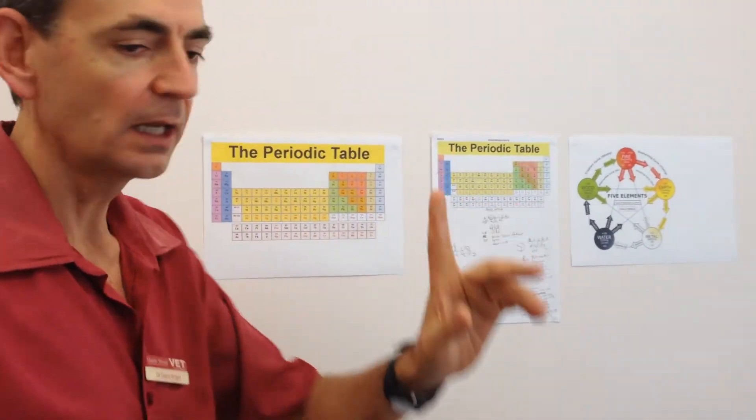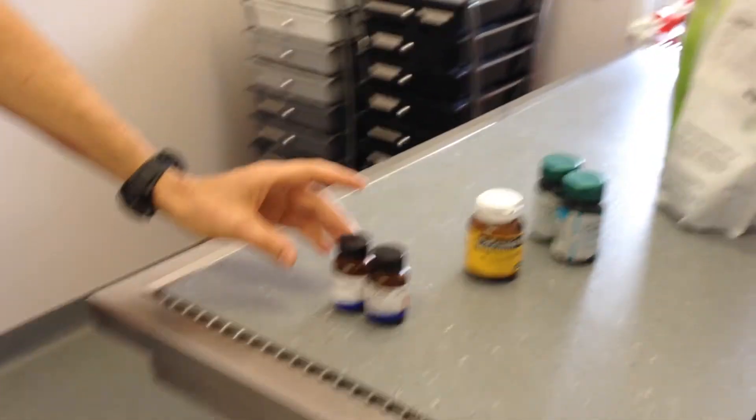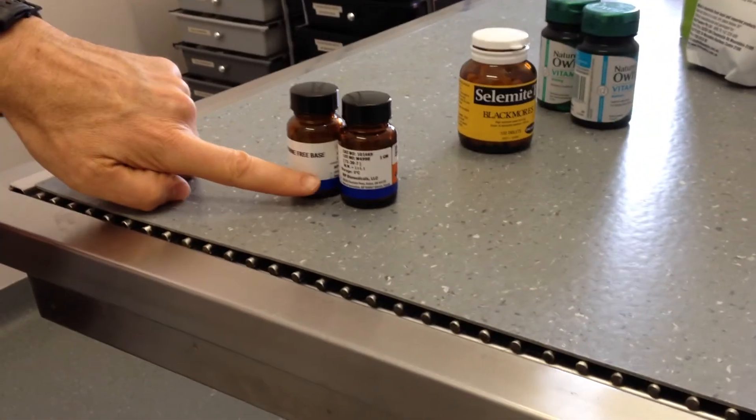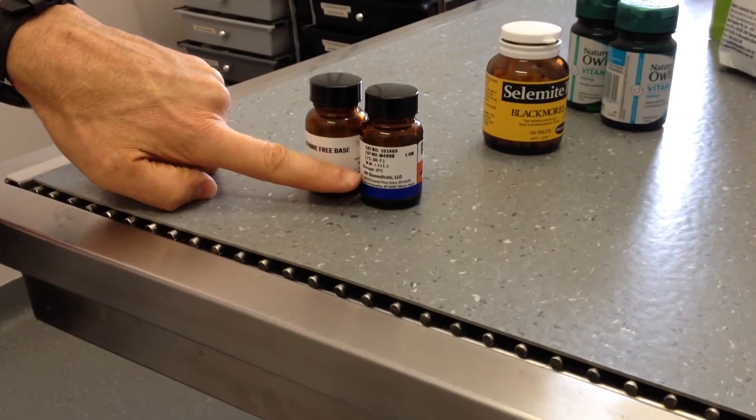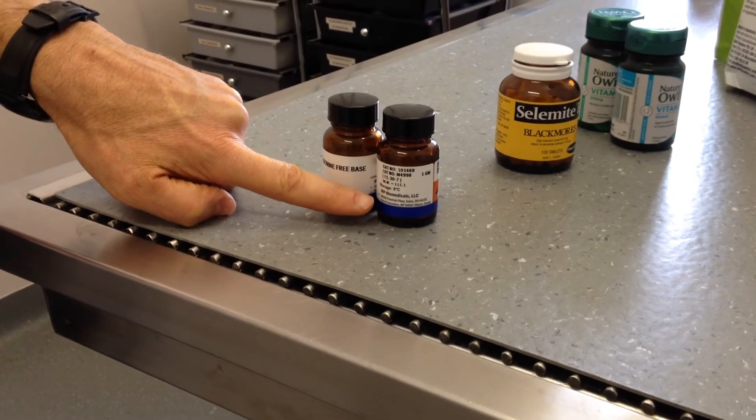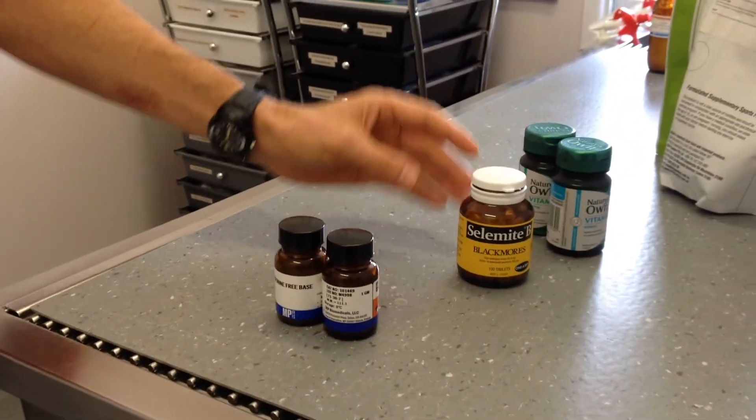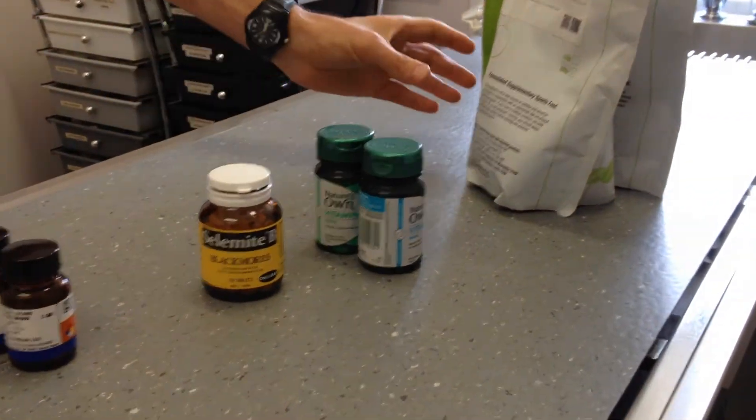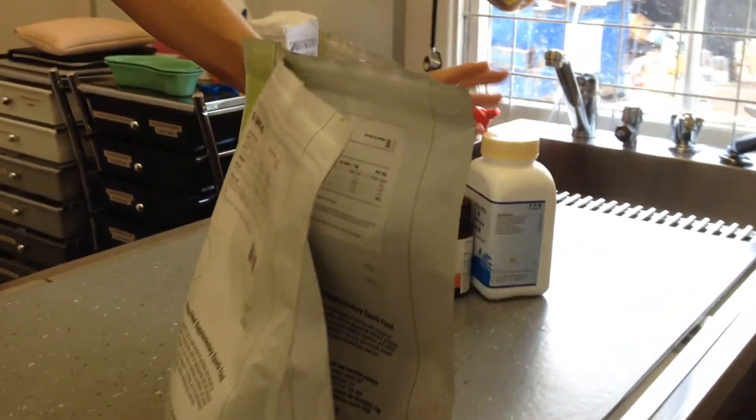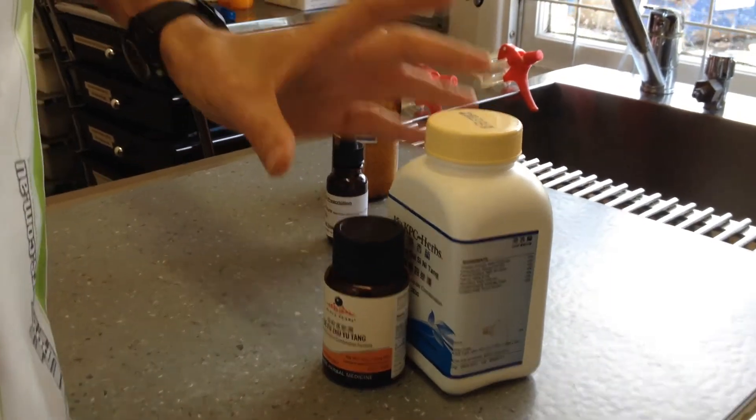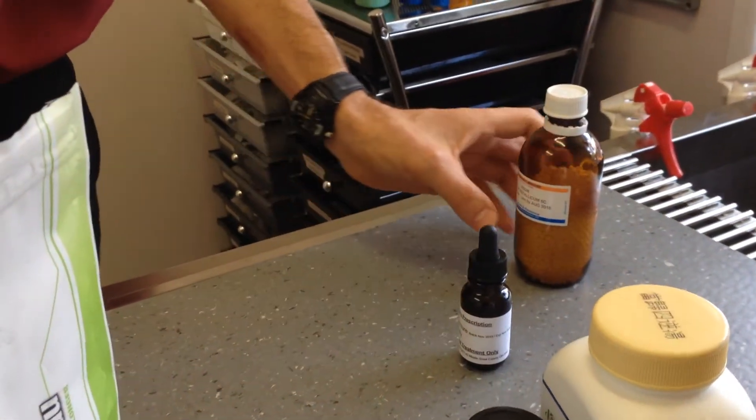For example, if we take a look here, these are the DNA bases that are represented by the heart: the minerals, vitamins, amino acids, herbs, Chinese herbs, Western herbs, and homeopathics.